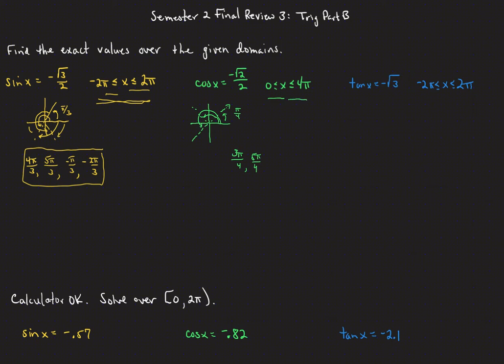Continuing from 2 pi all the way to 4 pi, we add 2 pi to the answers we just got. Since 2 pi is 8 fourths, that gives us 11 pi over 4. Adding 8 fourths to 5 pi over 4 makes 13 pi over 4. So again, two trips around the circle — 0 to 2 pi, then continuing to 4 pi — generates 2 angles each trip for a total of 4 angles.